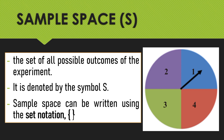Sample space can be written using set notation. For example, in the figure on the right side, we have here 1, 2, 3, and 4 — the numbers 1, 2, 3, and 4 are called the sample space. We will understand this better once I give you an example and identify the sample space and total possible outcomes.